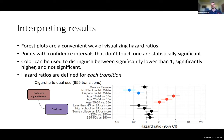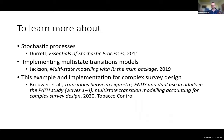As we wrap up this section, some resources: for stochastic processes more broadly, I recommend Essential Stochastic Processes. For implementing multi-state transition models, Christopher Jackson's vignette from his MSM package is really great. For implementation with complex survey design, check out our paper published in Tobacco Control in 2020. Now I'll talk about that paper in more detail — an implementation of a multi-state transition model for the Population Assessment of Tobacco and Health (PATH) study. One challenge with PATH is that it has a complex survey design with participant weights, which can be challenging to implement in a computationally efficient way.